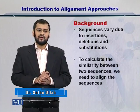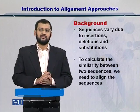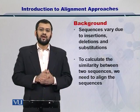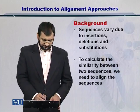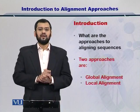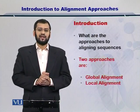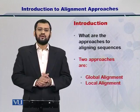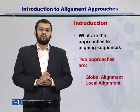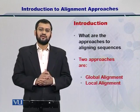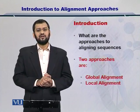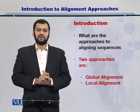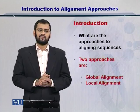Towards comparing two DNA, RNA, or protein molecules, we need to align the two sequences. Before we get to aligning these sequences, we need to know which approaches exist. Generally there are two approaches: the first one is global alignment and the second one is local alignment.